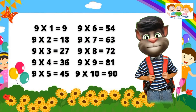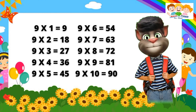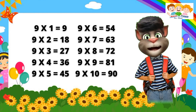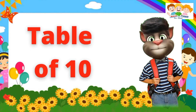Nine one's are nine. Nine two's are eighteen. Nine three's are twenty-seven. Nine four's are thirty-six. Nine five's are forty-five. Nine six's are fifty-four. Nine seven's are sixty-three. Nine eight's are seventy-two. Nine nine's are eighty-one. Nine ten's are ninety.